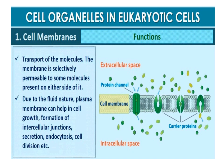One of the most important functions of the plasma membrane is the transportation of molecules across it. The membrane is selectively permeable to molecules present on either side of it. Due to its fluid nature, the plasma membrane can help in cell growth, formation of intercellular junctions, secretion, endocytosis, cell division, and more.